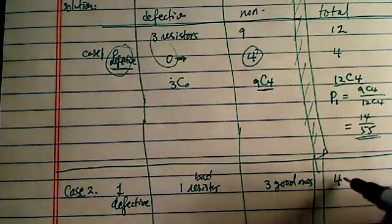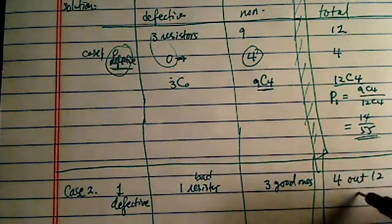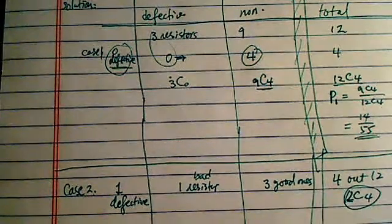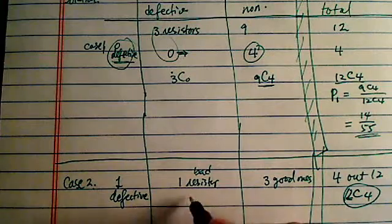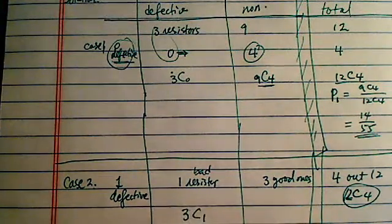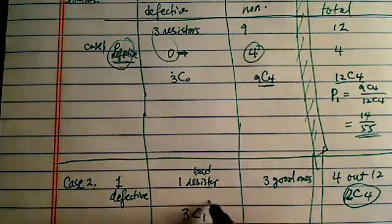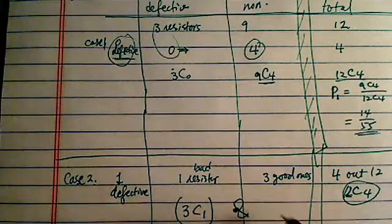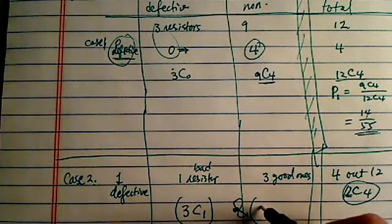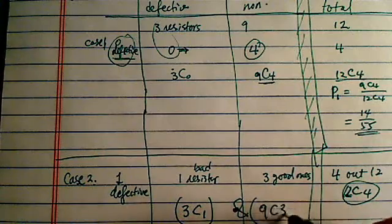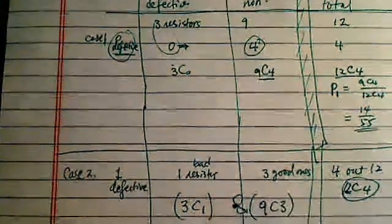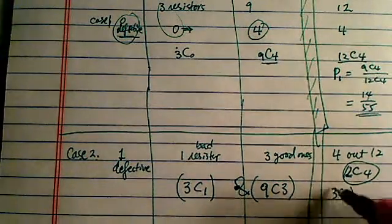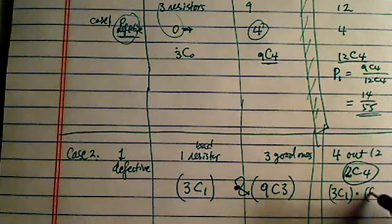So I'm still choosing 4 out of 12, and the number of ways I have is 12 choose 4. Total doesn't change. Now over here I changed a little bit. Since I have 3 bad ones, I can choose 1. That's the chance of choosing bad ones. And I have to, since it's a 2-step process, choose from the 9, I have to choose 3 good ones. So the probability for this case then it's 3 choosing 1 times 9 choosing 3.